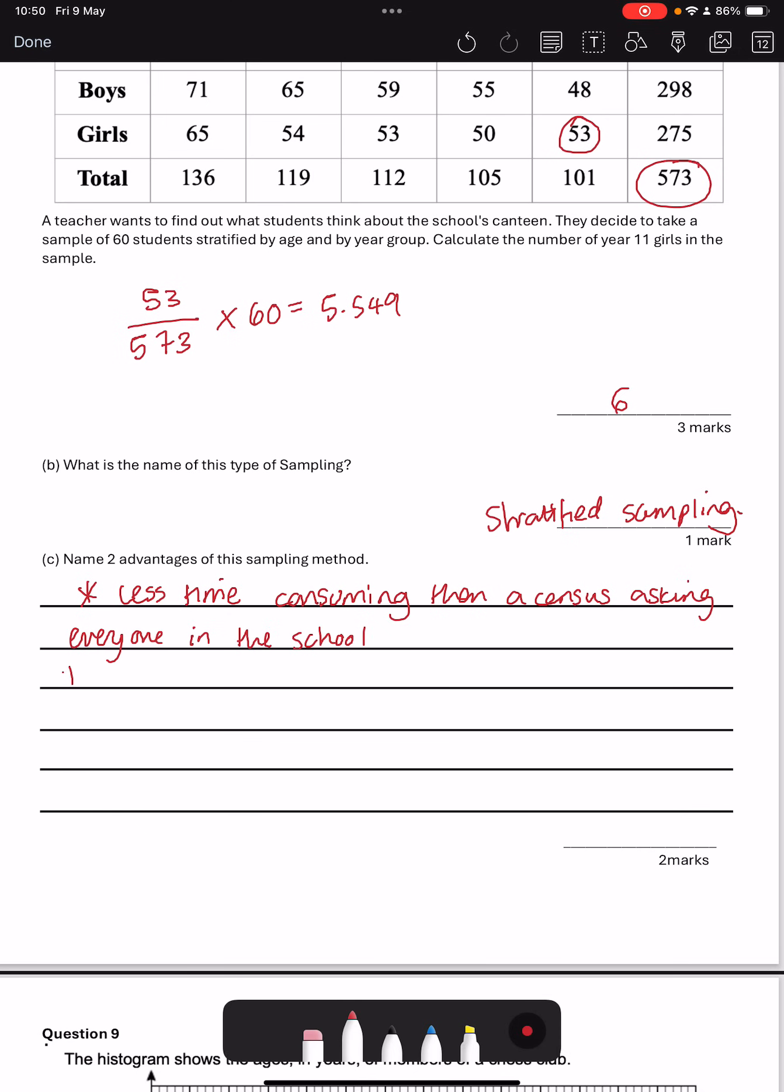The first advantage is it's less time consuming than a census asking everyone in the school. And then the second reason is that it is going to proportionately represent the ages and genders in the school. So it will be a representative sample.